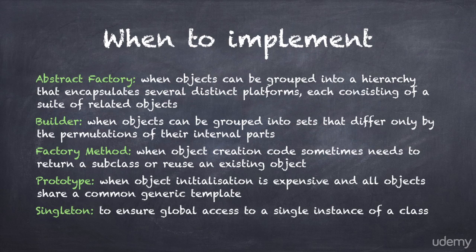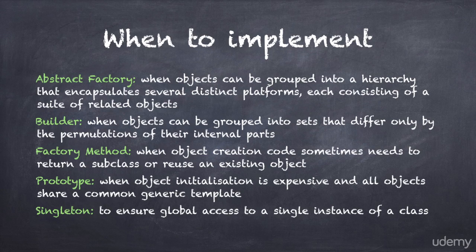You implement the factory method pattern when your object creation code sometimes needs to return a subclass or reuse an existing object. You implement the prototype pattern if your object initialization is very expensive, and all objects share a common generic template. And you implement the singleton pattern when you want to ensure global access to a single instance of a class.